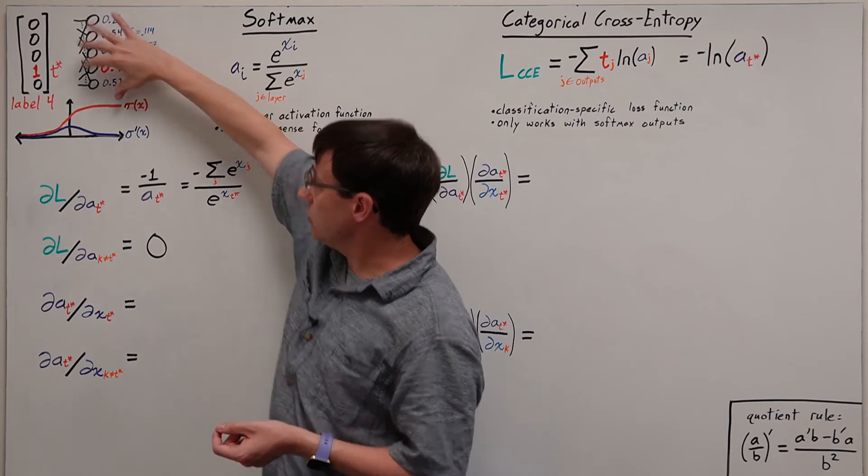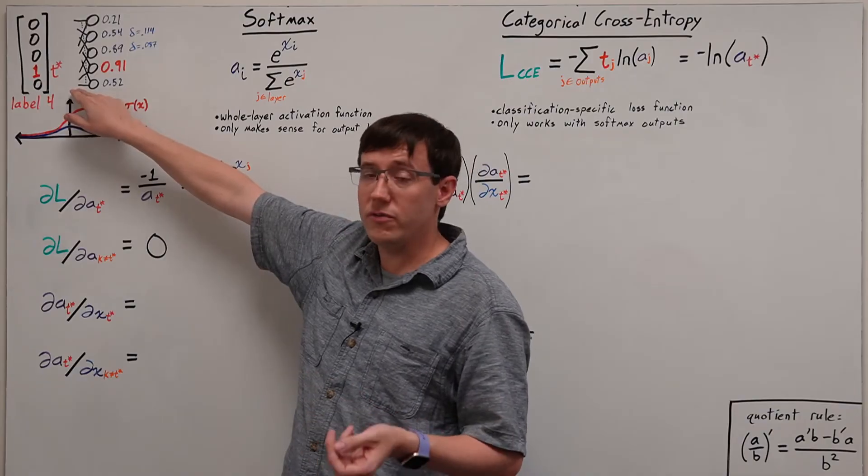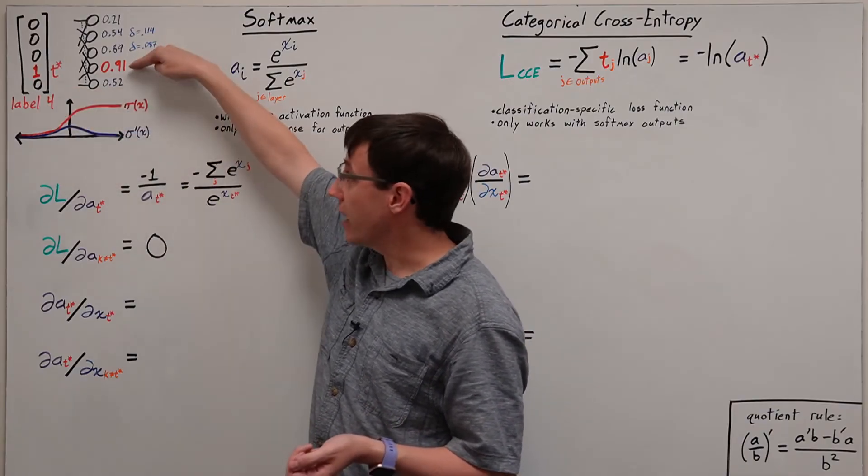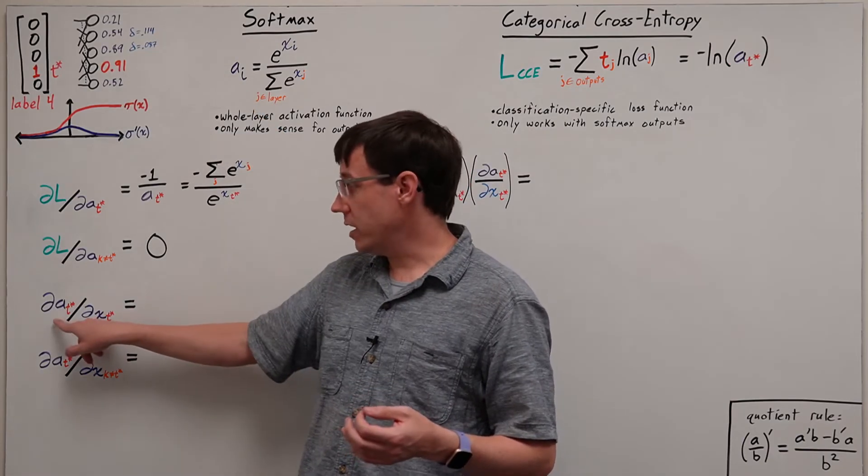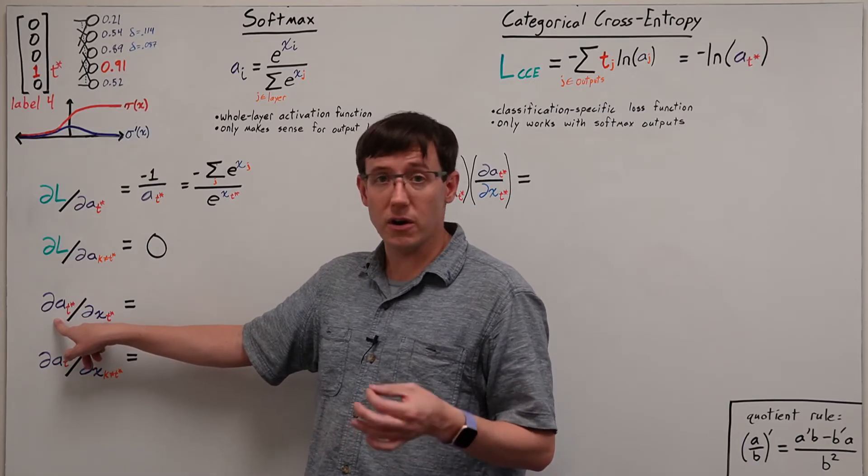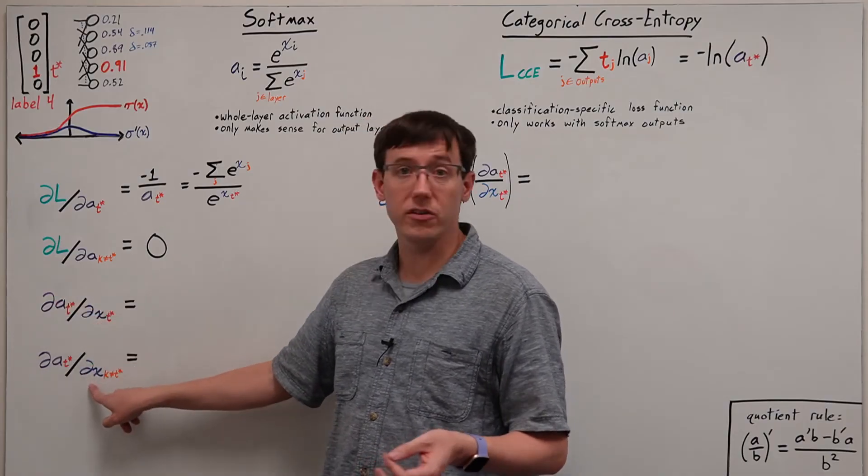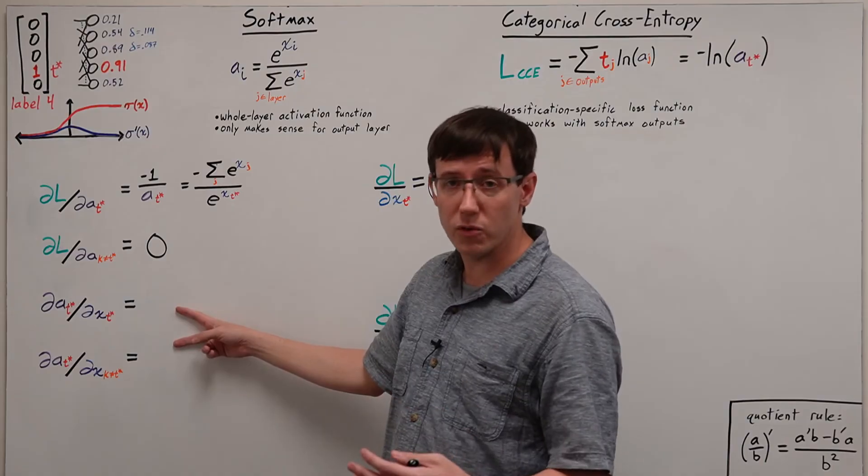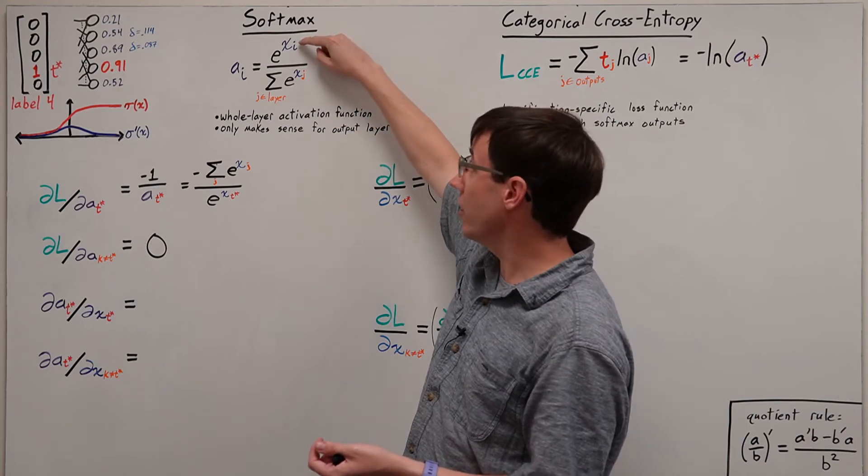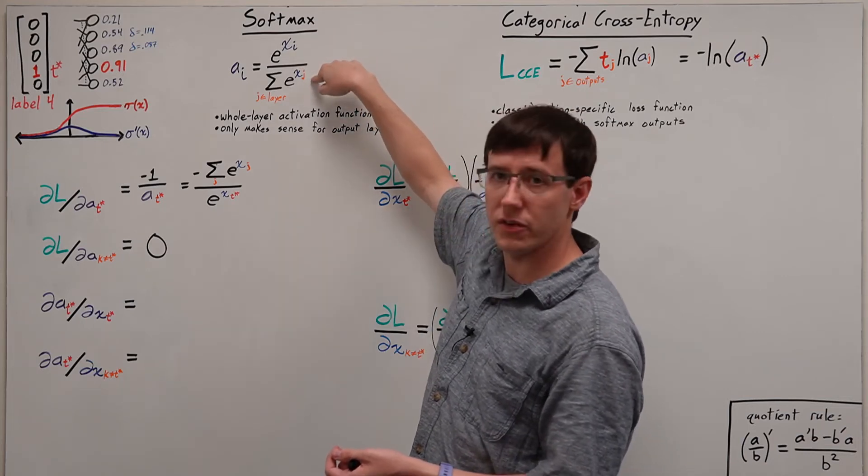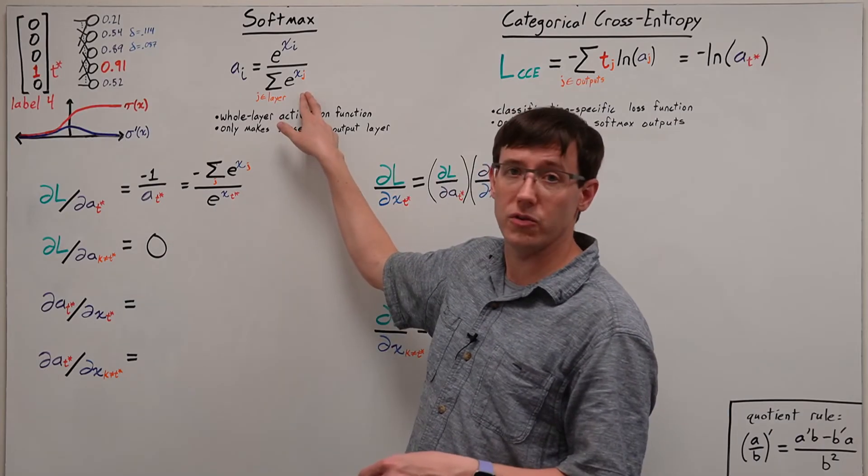And so even though we only have a nonzero partial derivative for this activation, we will still get nonzero deltas for all of the inputs. So now we need to figure out how do each of these inputs affect the activation of the T star neuron, which means determining the partial derivative of the T star activation with respect to both the T star input and each of the other inputs. So in both cases we're taking the derivative of this activation, but in the first case we're focusing on the variable that appears both on the top and in the sum, and in the second case we're looking at one of the other variables that only appears in the denominator.